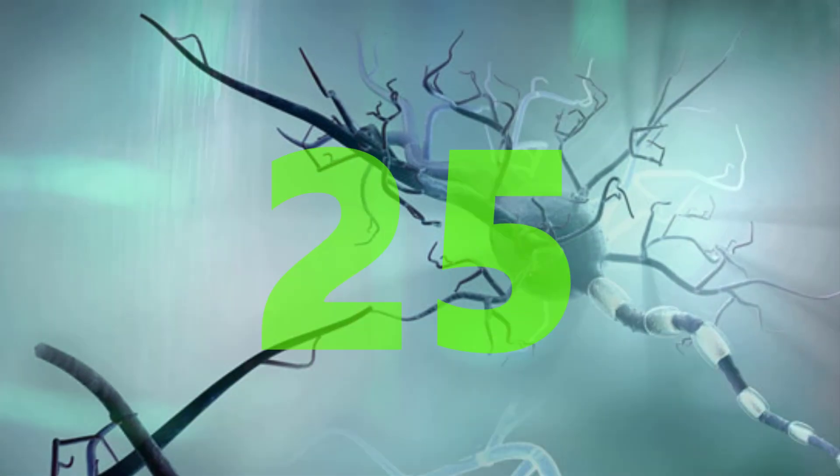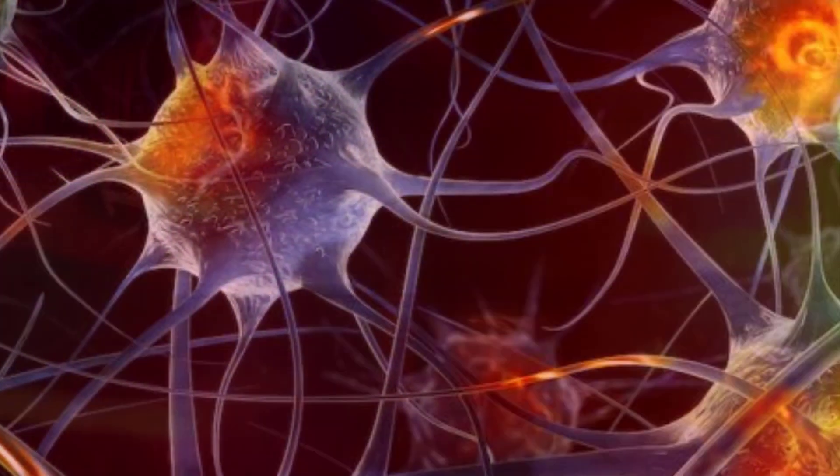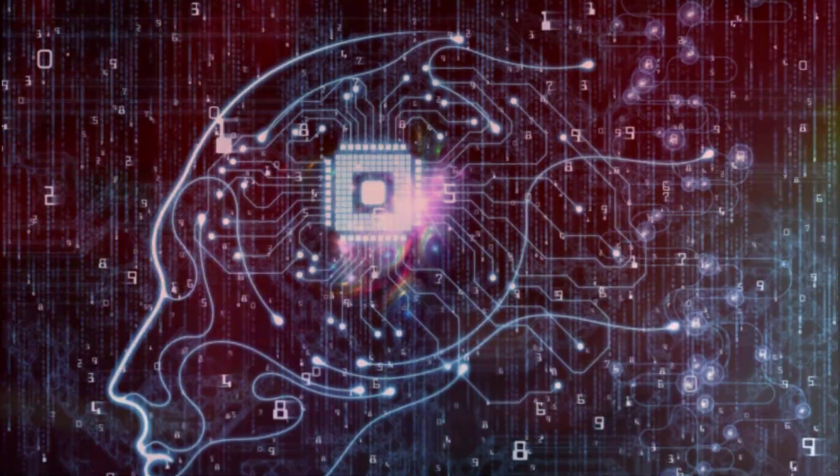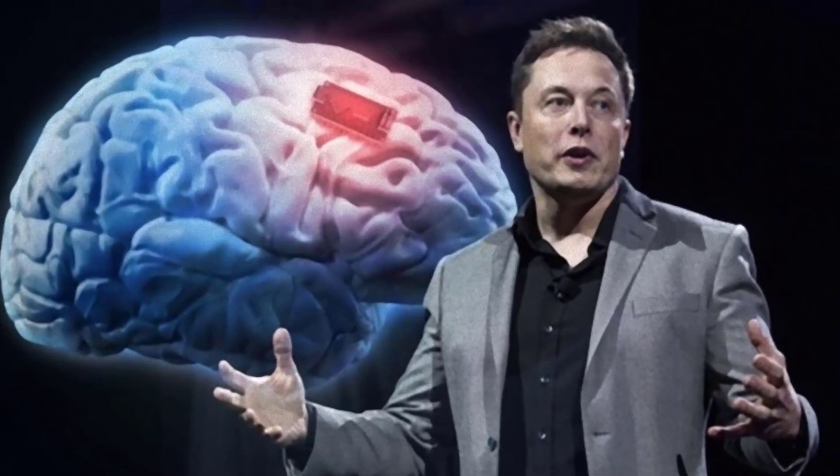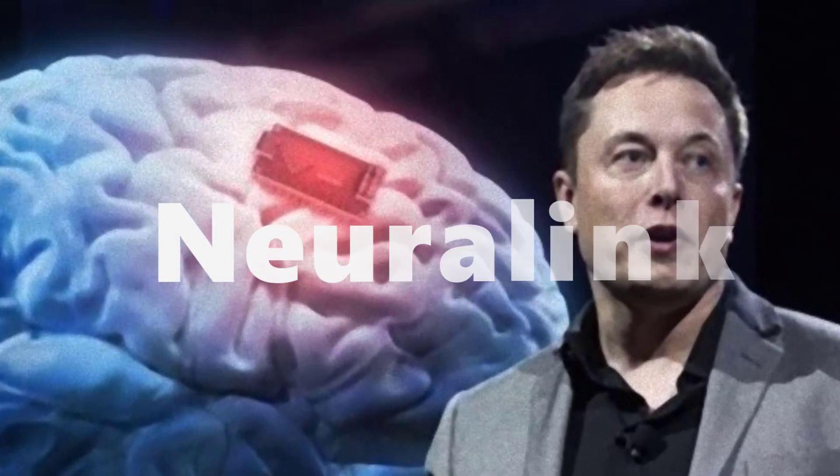Yet, after we turn 25 years old, they start dying at an alarming rate, eventually causing our brains to age until we die. Sounds terrifying, though there's hope thanks to Neuralink, founded by Elon Musk.